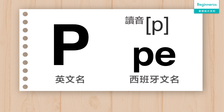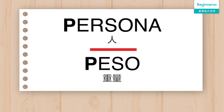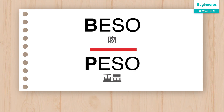而接下來的 P 也是非常簡單，因為它在任何情況之下都是跟英文的發音一樣，有一個噴氣的聲音 P。例如 Penelope，這也是一個非常普通的西班牙文女名。其他的例子例如 Persona。可能大家會覺得 B 和 P 的發音很相似，但其實西班牙文裡面 P 的音是比較重的。例如 Beso 是 B 的，而 Peso 就是 P 的。